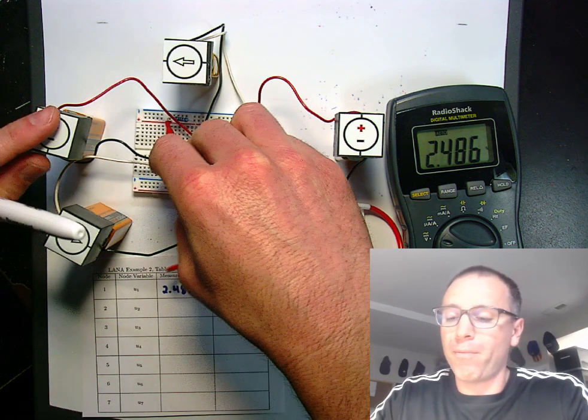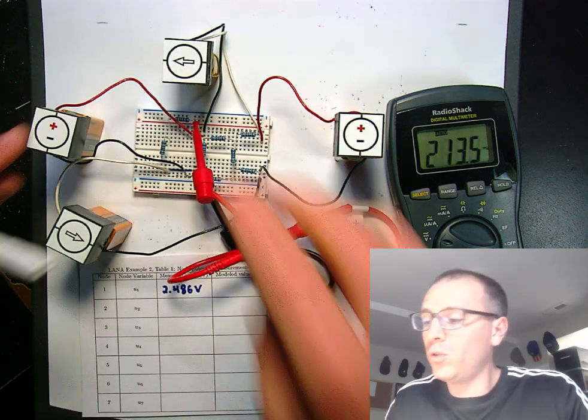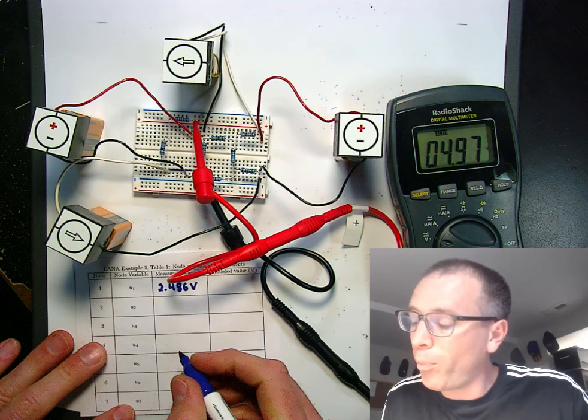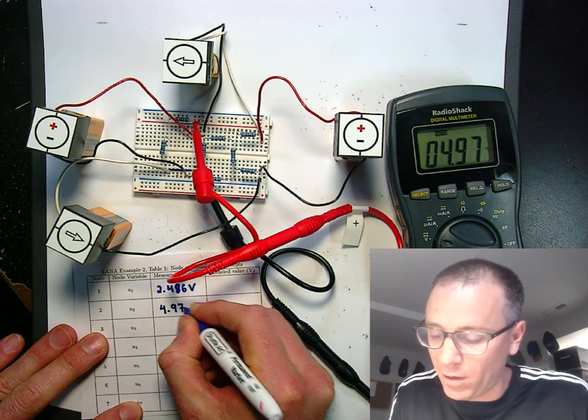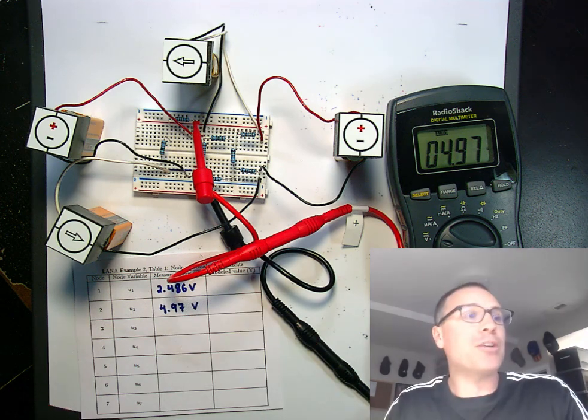We move our positive lead over to node 2. Let's capture that. Looks like 4.97 volts. 4.97 volts is the measurement.